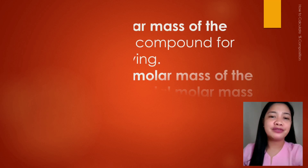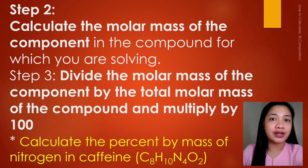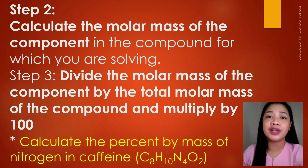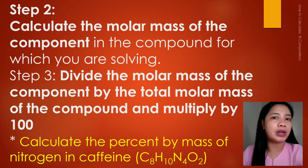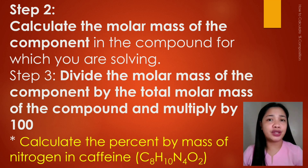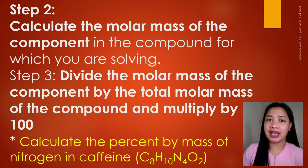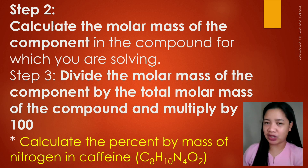For step number two and number three, we are going to calculate the molar mass of the component in the compound for which you are solving. After that, we are going to divide the molar mass of the component by the total molar mass of the compound and multiply by 100. In our problem, we need to calculate the percent by mass of nitrogen in this compound. Therefore, we need to get only the percent by mass of the element nitrogen only.